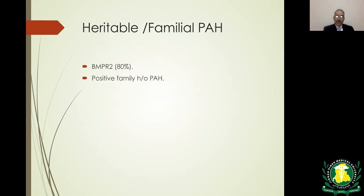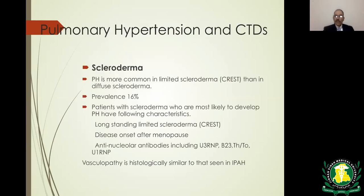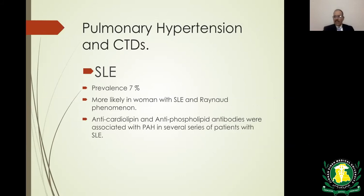For hereditary PAH, BMPR2 is positive in 80 percent of cases and there will be a family history. Regarding PAH associated with connective tissue diseases, the two leading conditions are scleroderma and SLE. Prevalence in scleroderma is 16 percent, more common in limited scleroderma known as CREST syndrome, and onset is usually after menopause.